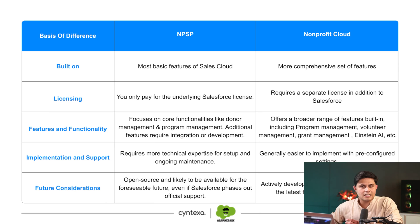NPSP focuses on core functionality like donor management and program management and can integrate with different applications. Nonprofit Cloud offers a broader built-in range of features including program management, volunteer management, grant management, and Einstein AI. Implementation of NPSP requires more technical expertise for setup and ongoing maintenance, whereas Nonprofit Cloud is generally easier to implement with pre-configured settings.